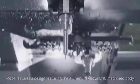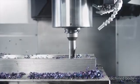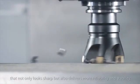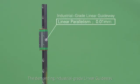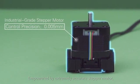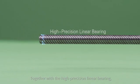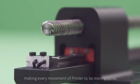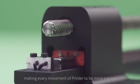Moos features a design with an aluminum alloy CNC machined body that not only looks sharp but also delivers more reliability and stability. The demanding industrial-grade linear guideway, empowered by extremely accurate stepper motor, together with the high-precision linear bearing, makes every movement of the printer more precise.